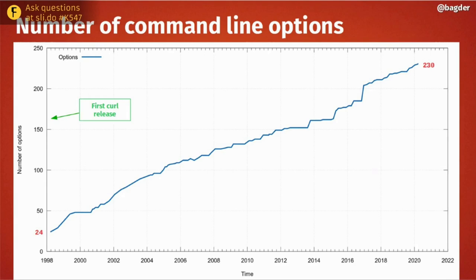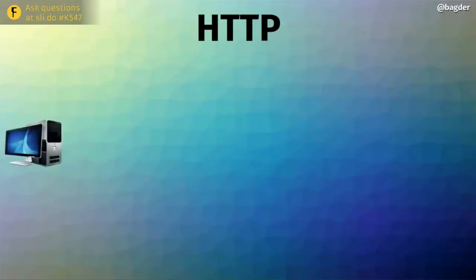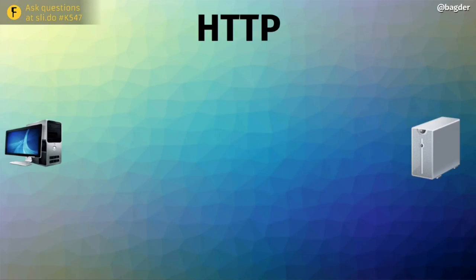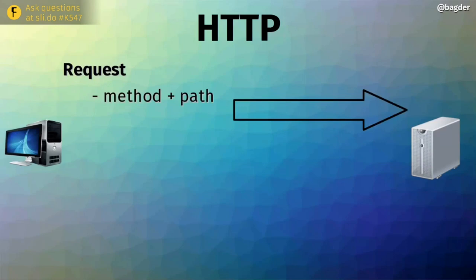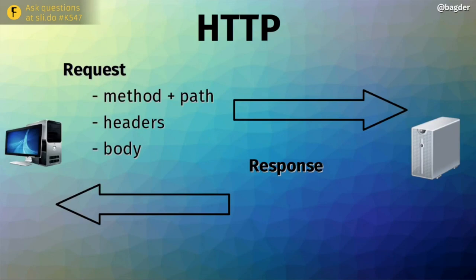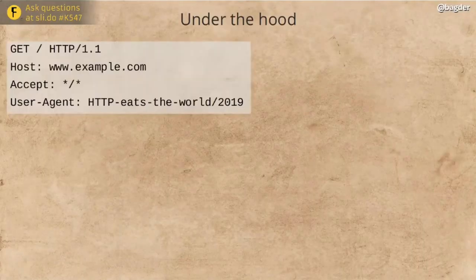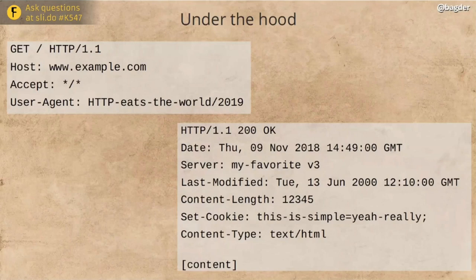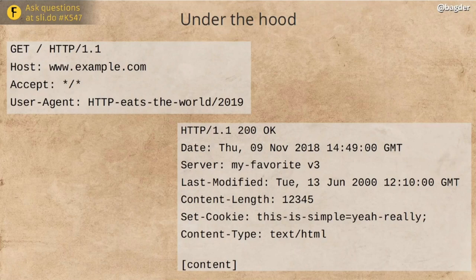So, what is HTTP? It's a simple protocol. You send a request to a server — a method, a path, headers, and possibly a body — and you get a response code, headers, and a body back. It looks like this from a protocol perspective: a request with some headers and a response with a 200 code, headers, and content. HTTP has basically looked like this since the mid-nineties; HTTP 1.0 introduced this format in 1996.